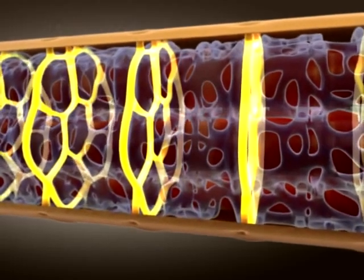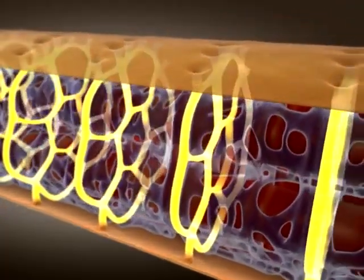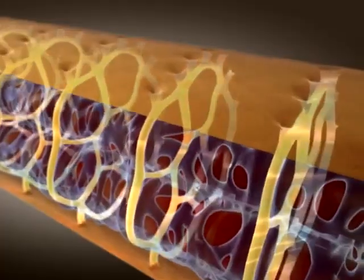Transverse, or T-tubules, are regularly spaced infoldings of the sarcolemma that branch extensively throughout the muscle fiber.